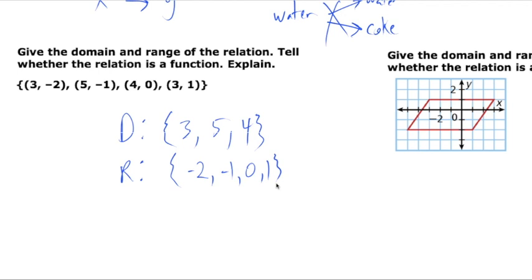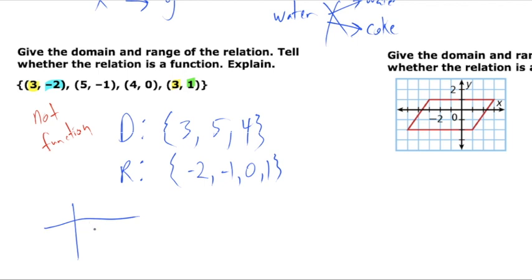We also want to figure out whether this is a function. Remember, a single x value can only have one y value associated with it. If we look closely, we have two ordered pairs with the same x value of 3, but they go to different y values. Because we have the same x value mapping to different y outputs, this is not a function.